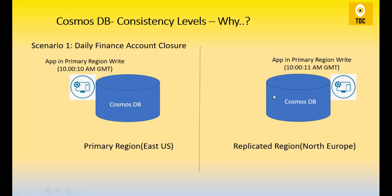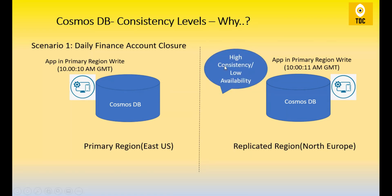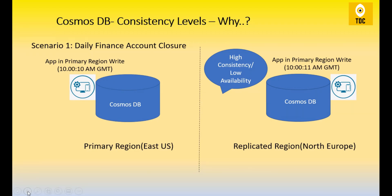Because of the sync issue, data consistency is very important here. Availability can be compromised because the latency is not in hours — it is just seconds or milliseconds, so we can afford to wait for records to finish syncing. This is scenario one, where high consistency is the priority and availability can be slightly compromised.